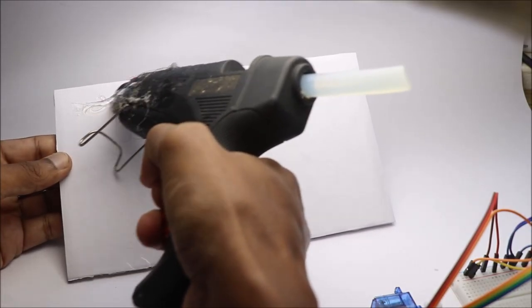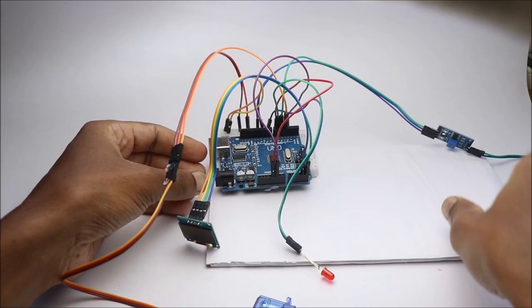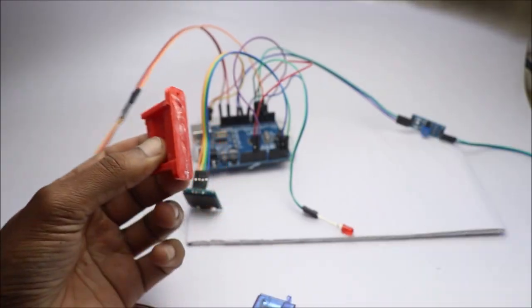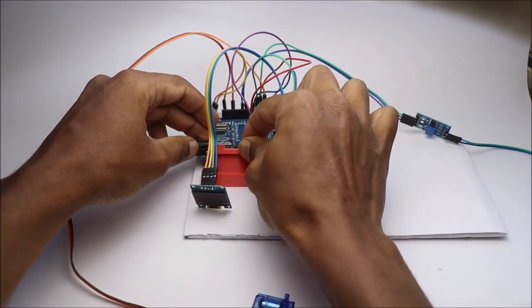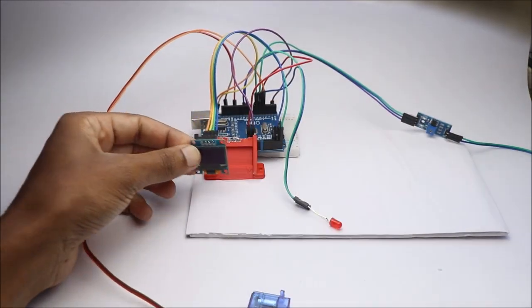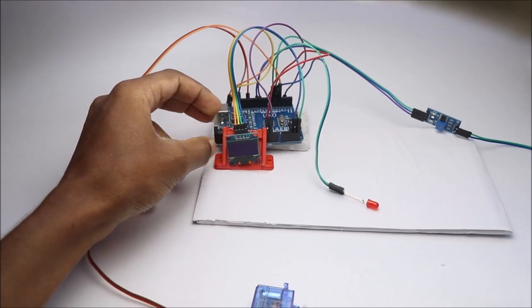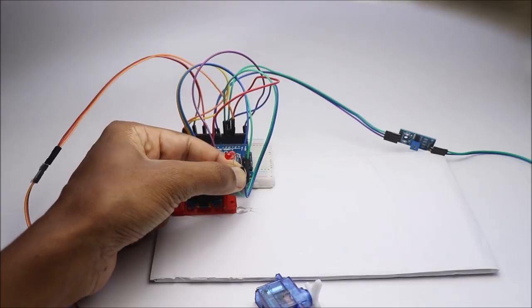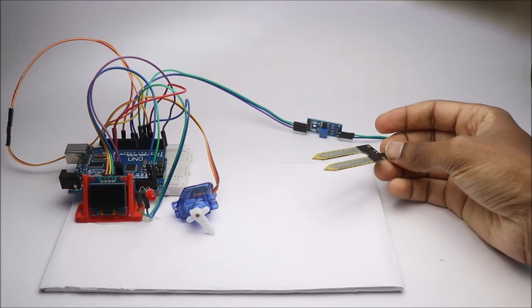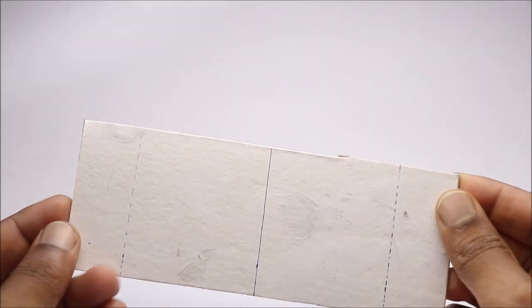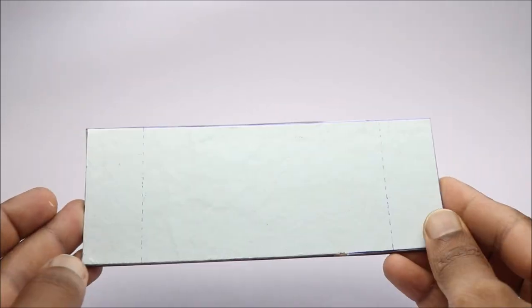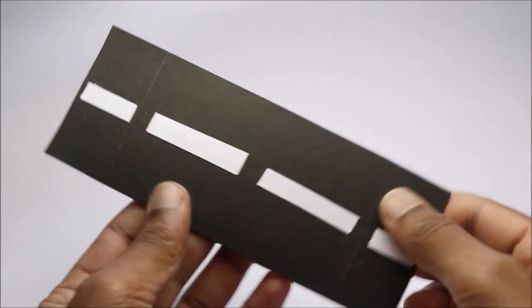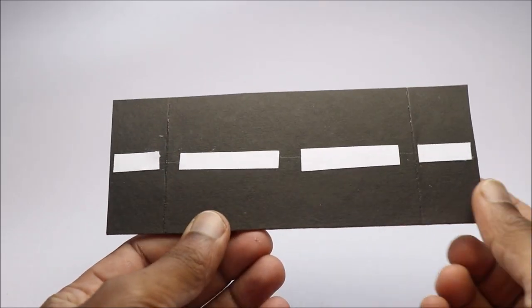Now I will set all these components on a piece of cardboard. Follow these simple steps to make the bridge. I will be using only paper and cardboard. Alternatively, you can also use 3D printed parts if necessary.